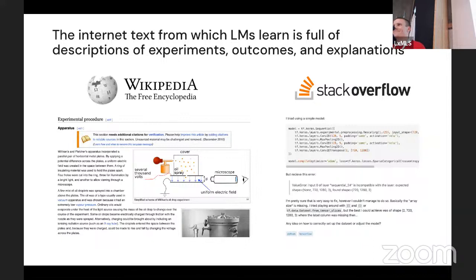Q&A: A question about providing explanations both when the agent is correct and when incorrect. Examples like Stack Overflow typically describe failure modes — they tell you what's wrong and what to change, not necessarily what's correct. Did you do any ablations using only one type of explanation or the other?